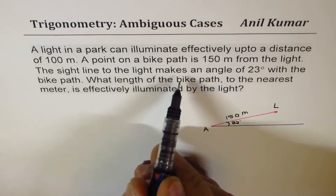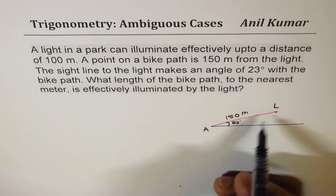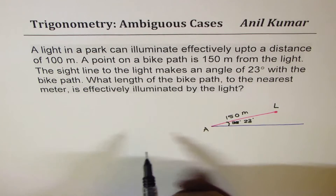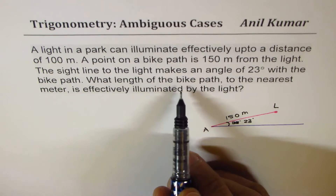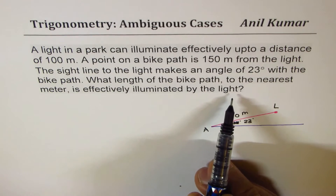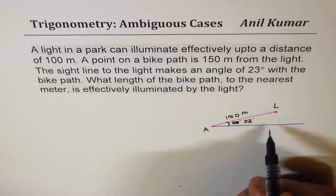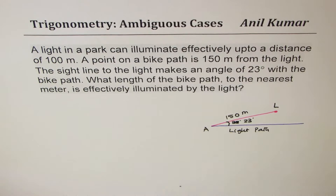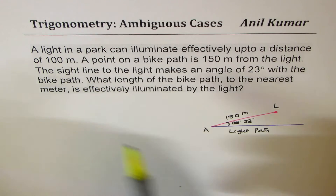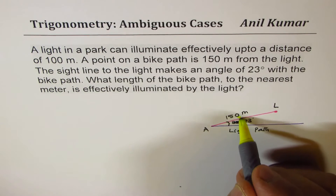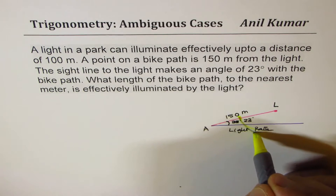The sight line to the light makes an angle of 23 degrees — not 32, 23 degrees. Now the question here is: what length of bike path to the nearest meter is effectively illuminated by the light? The light path is right there. As given, the light can only illuminate up to 100 meters effectively — kind of like here. So from here, this much portion can be illuminated. We can make a circle.